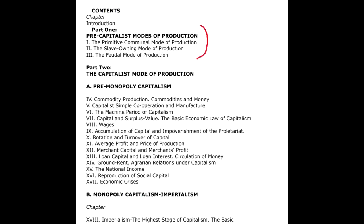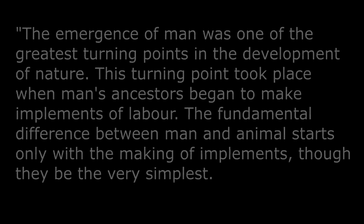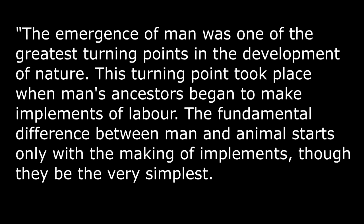It's the earliest mode of production in human history and the earliest economic formation of human society. The first part of this chapter talks about the emergence of humans as a species. There were anthropoid apes which eventually evolved into humans. The book says: 'The emergence of man was one of the greatest turning points in the development of nature. This turning point took place when man's ancestors began to make implements of labor. The fundamental difference between man and animal starts only with the making of implements, though they be the very simplest.'